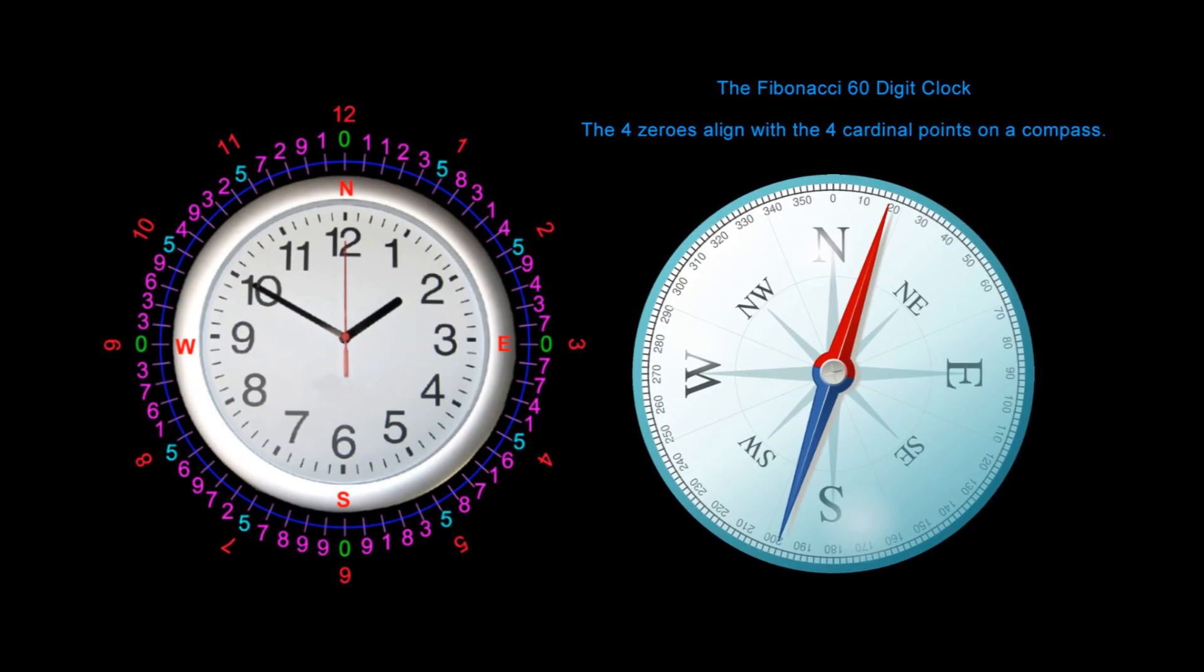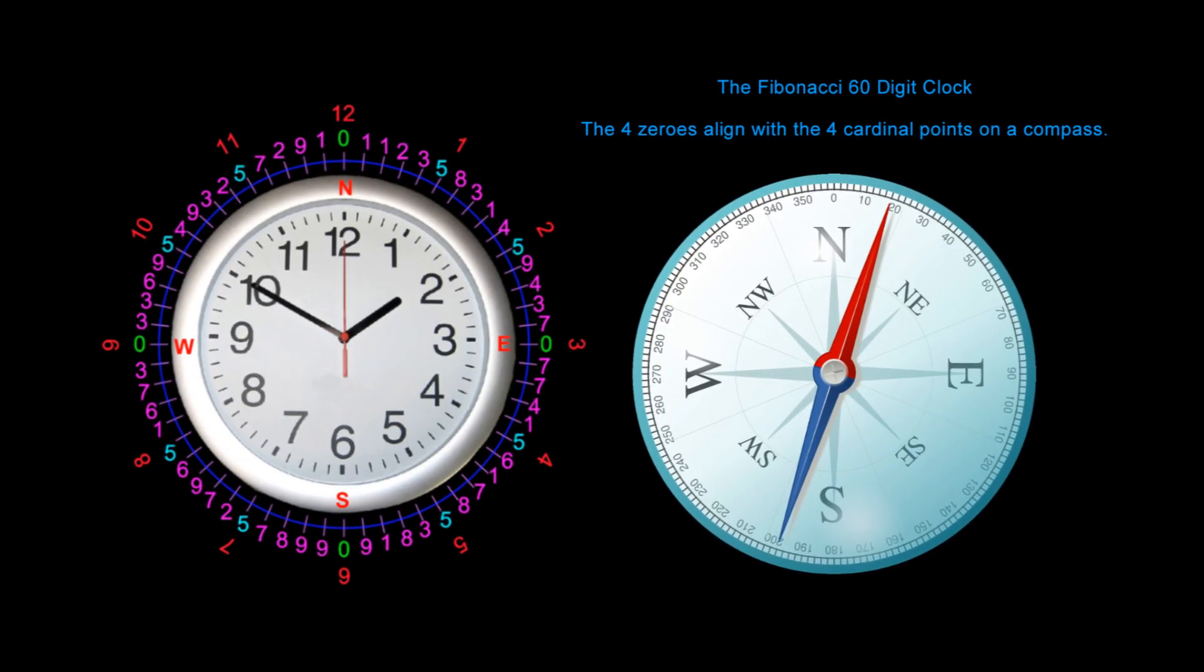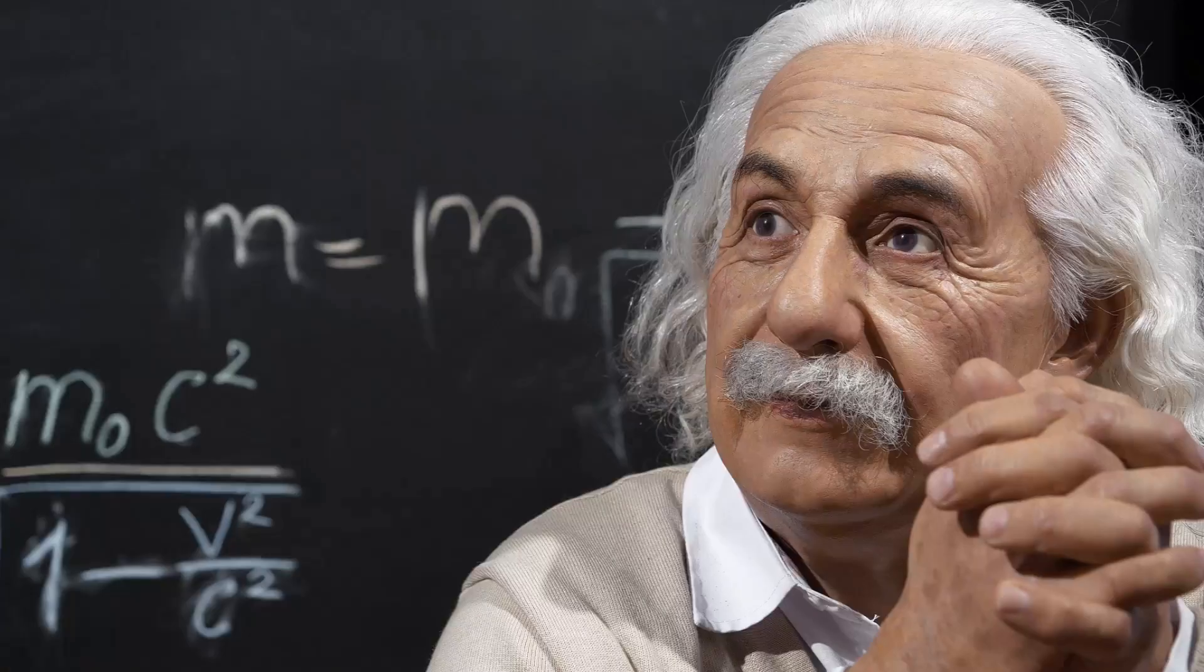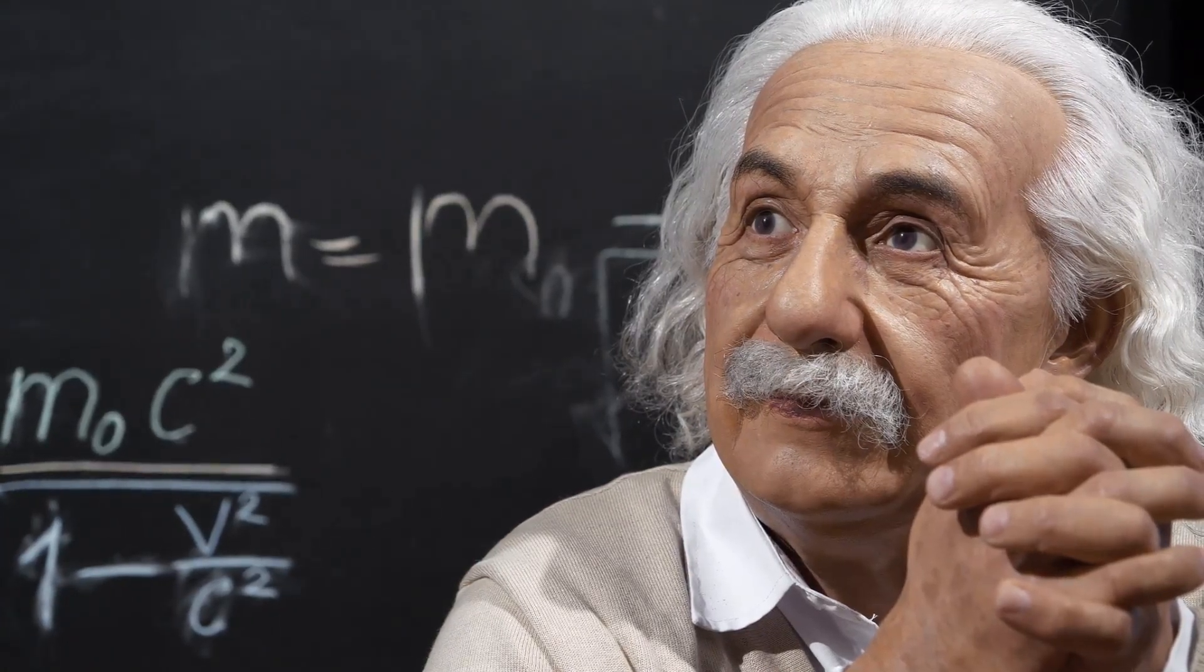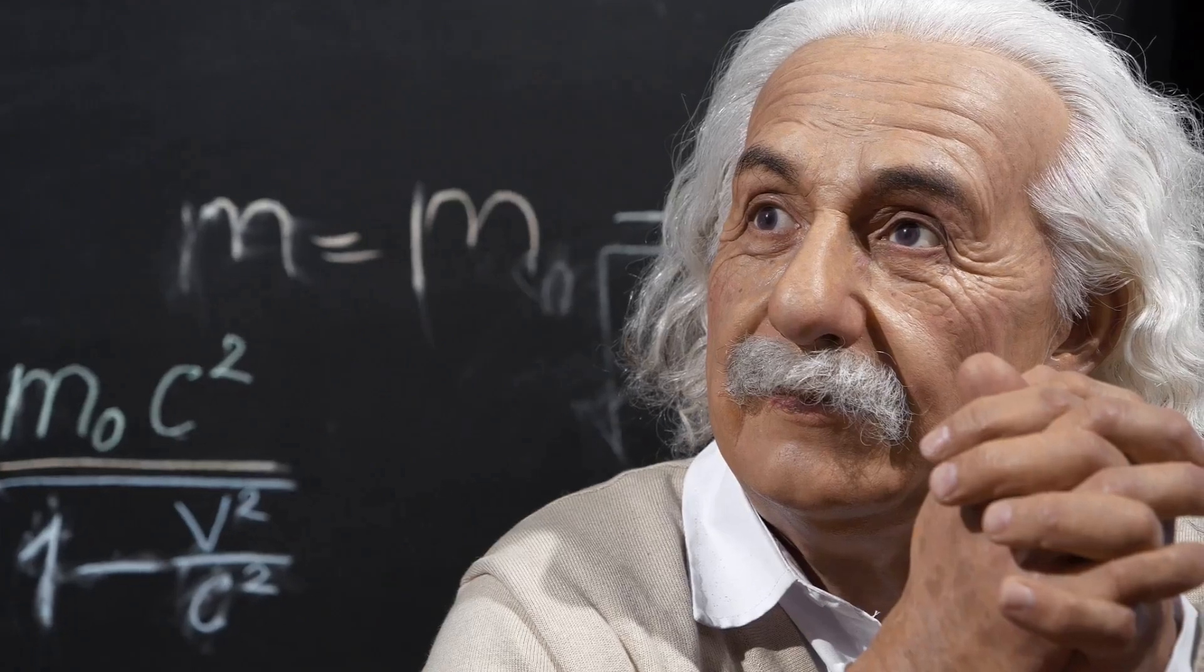We use 60 to measure time and we use 360 degrees to measure space. Einstein said the universe is made up of a fabric of space and time which he called space-time.